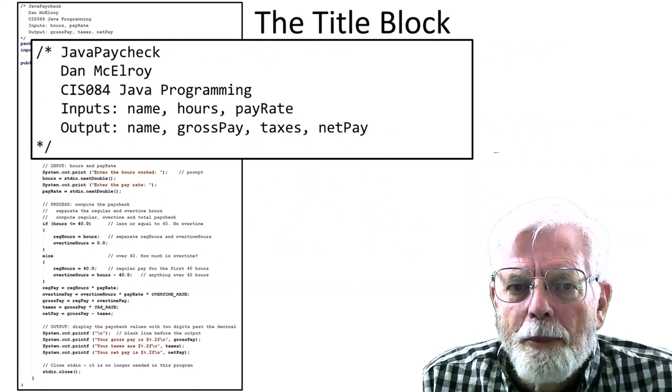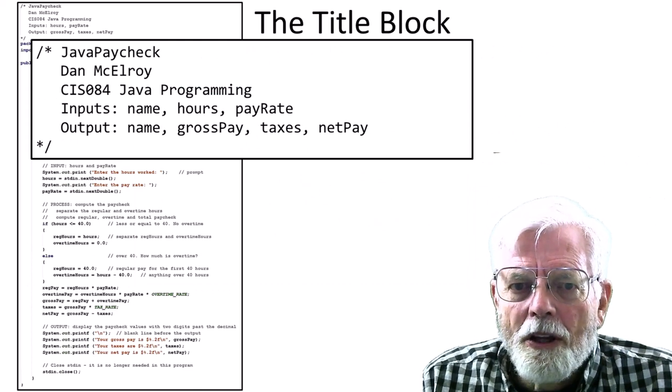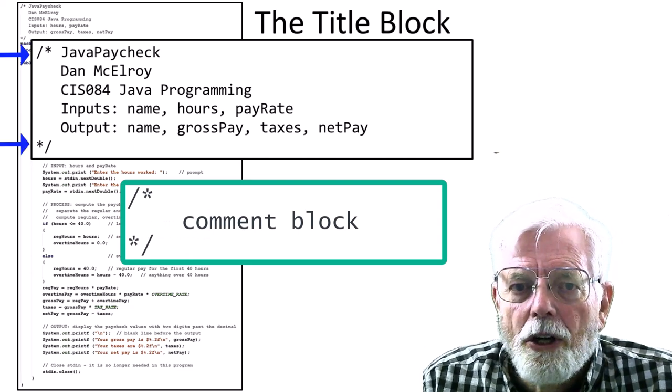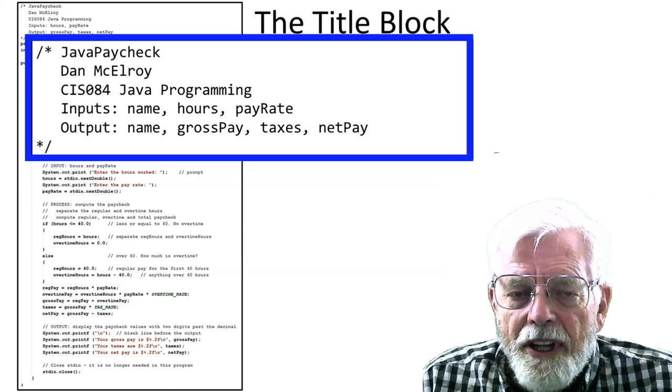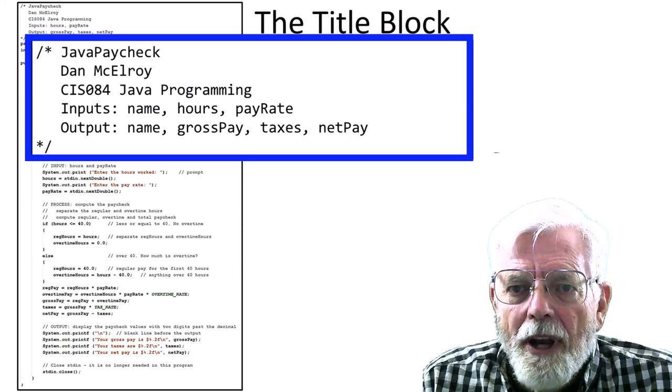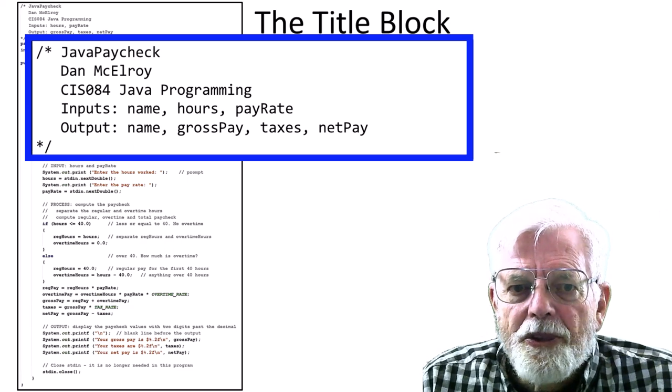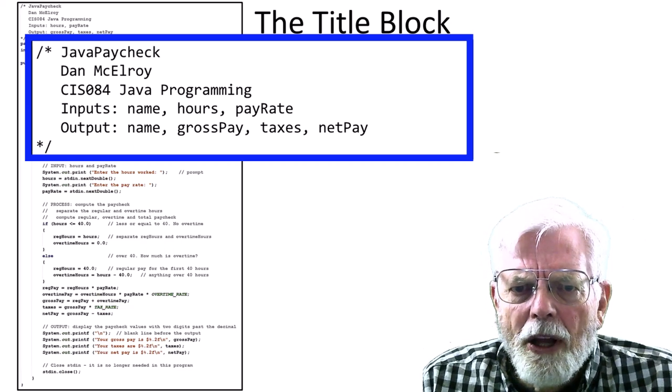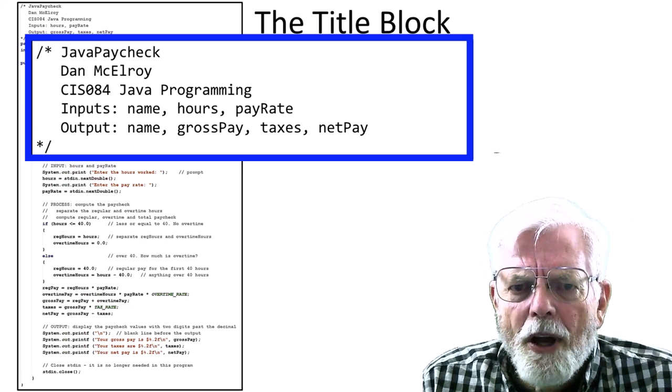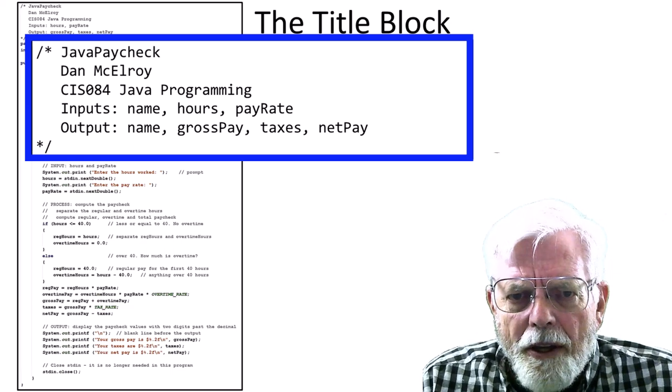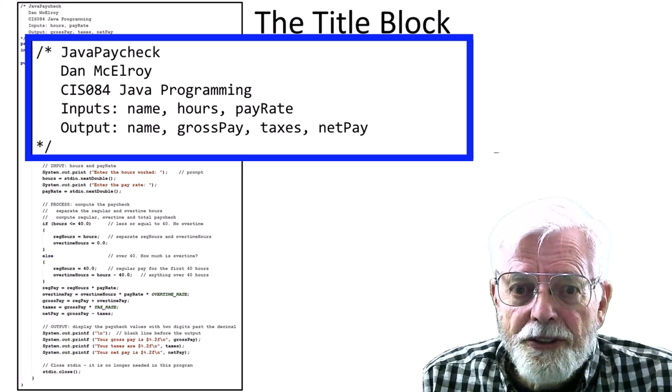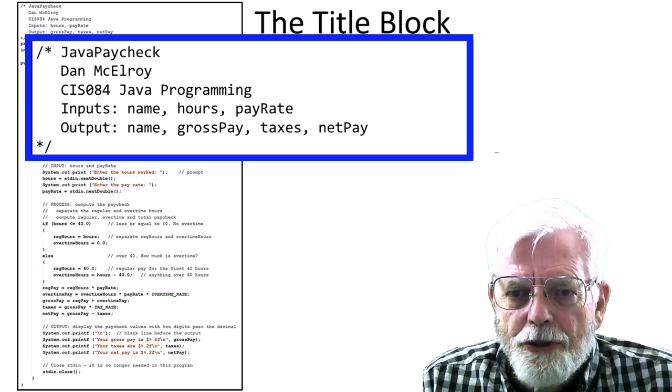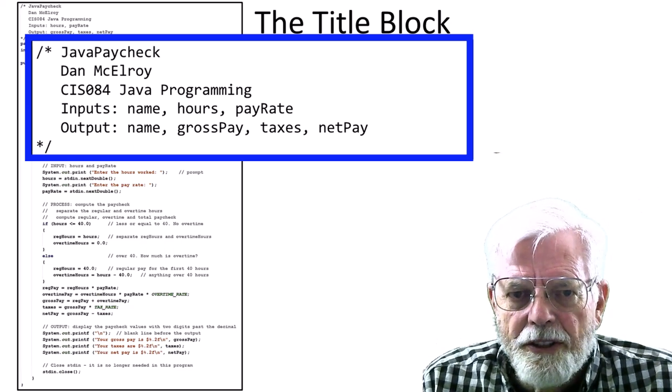The title block at the top of the program file uses the block style comment starting with a slash star and ending with a star slash. The comment block identifies what is in the file as well as the inputs and outputs. Some companies want the programmer's name in the title block, others don't. I want your name in the title block and I will look for it when I grade your projects. Although not shown here, another couple of things that are actually placed in the title block are the version number and the date. This can help determine the latest versions of the code when there are multiple files that are not the same.